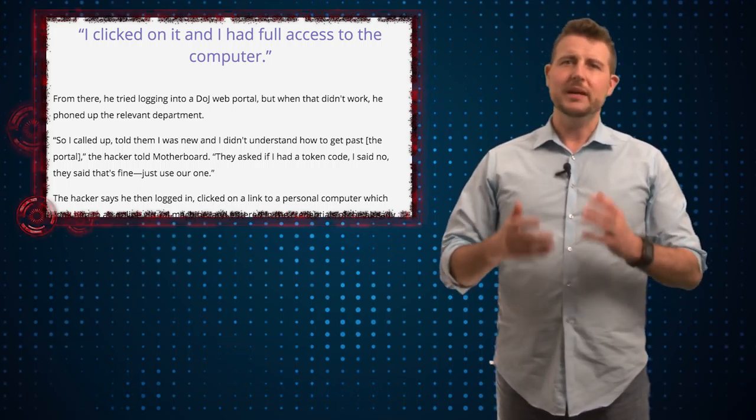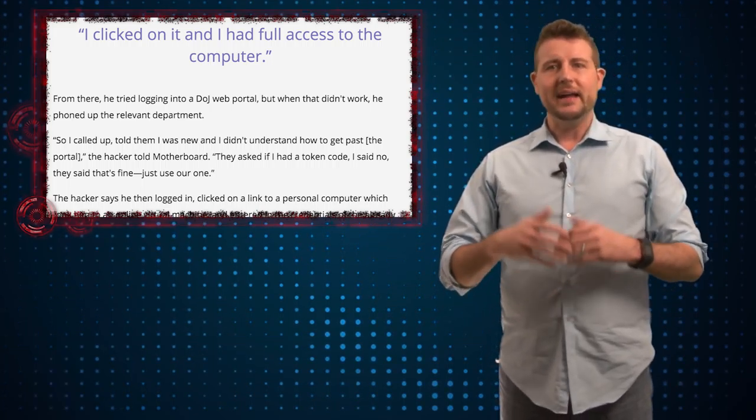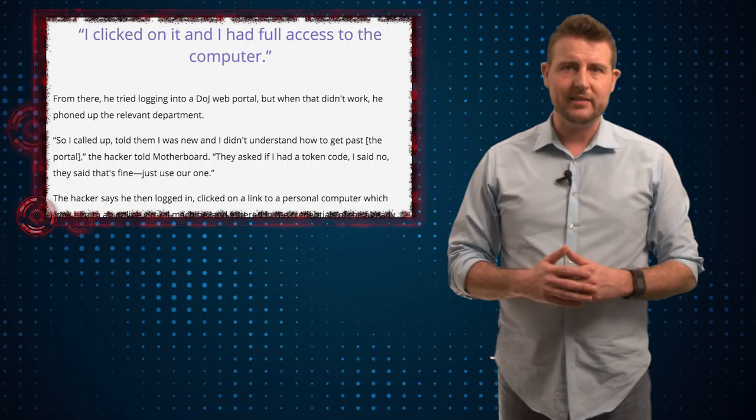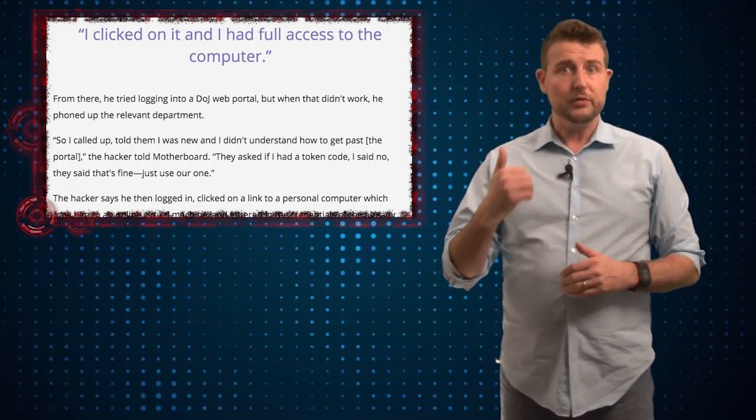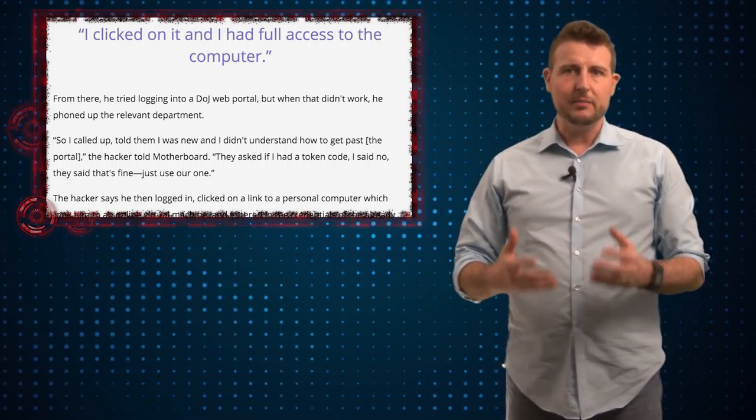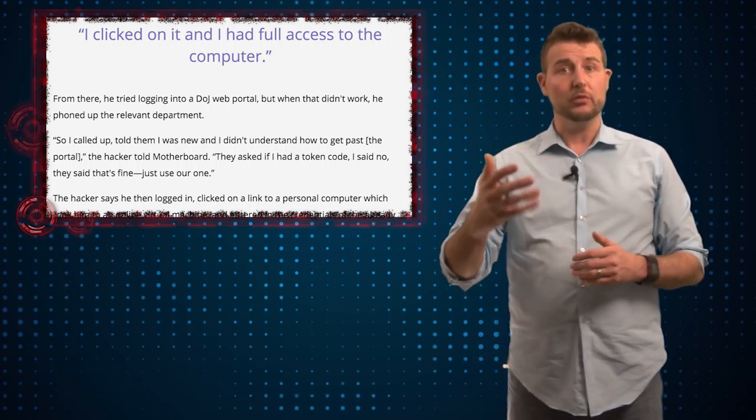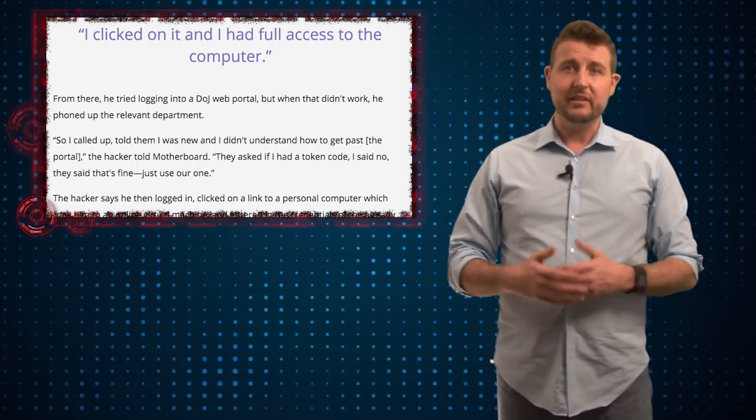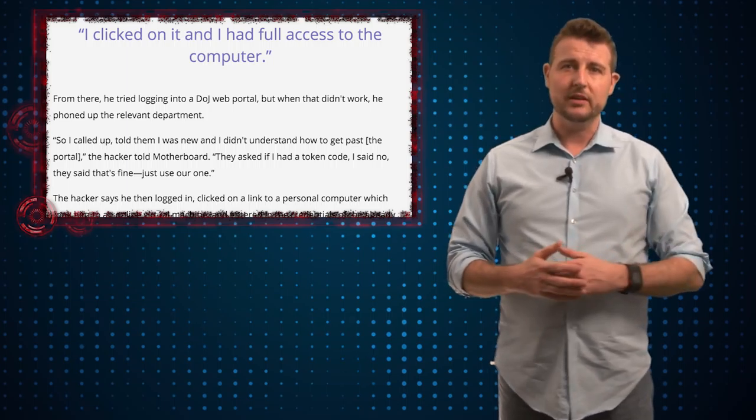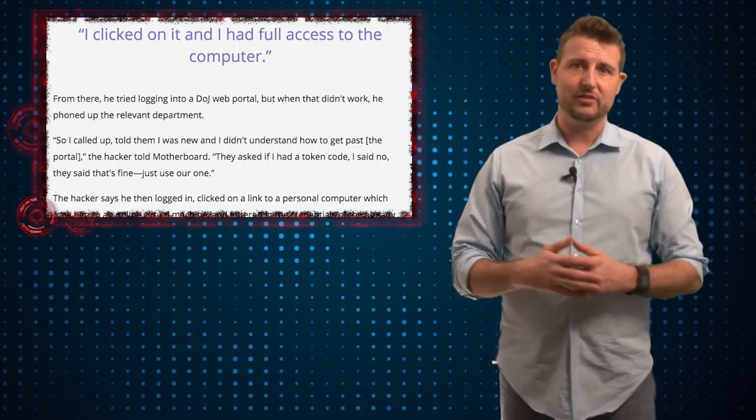But what he did next was actually call up the support for this web portal. He basically pretended to be a new employee and he couldn't figure out how to gain web access. Long story short, the person he talked to actually gave him the token necessary to get through the web portal, which gave him apparently access to virtual machines that that particular DOJ employee had access to.